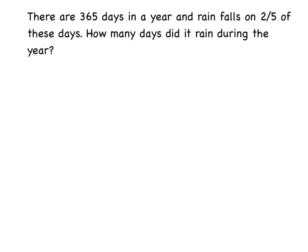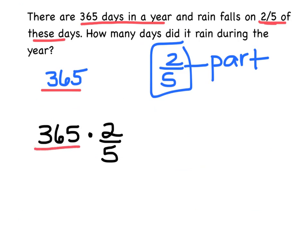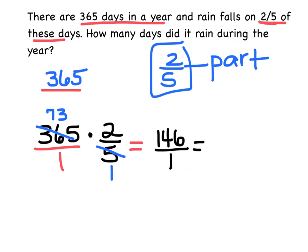Here's our last one. It says there are 365 days in a year — I'm going to underline that. And rain falls on two-fifths of these days. So it doesn't fall every day, it falls on just a part of those days. If you're trying to find a part of a number — I'm trying to find part of 365 — I can multiply. So I can do 365 times two-fifths. I'm going to put a one underneath and use my fraction trick: simplify before I multiply. Five goes into five once, and 365 divided by five is 73. So 73 times two is 146, over one, which means rain falls on 146 days.